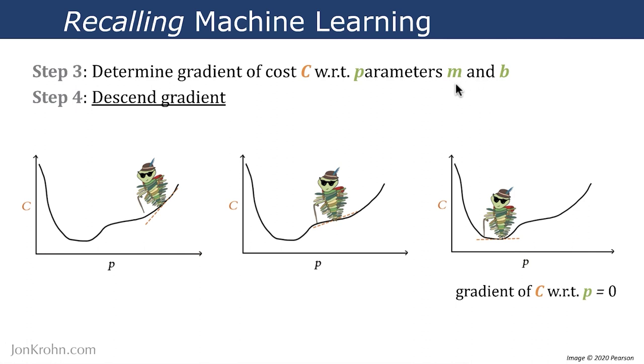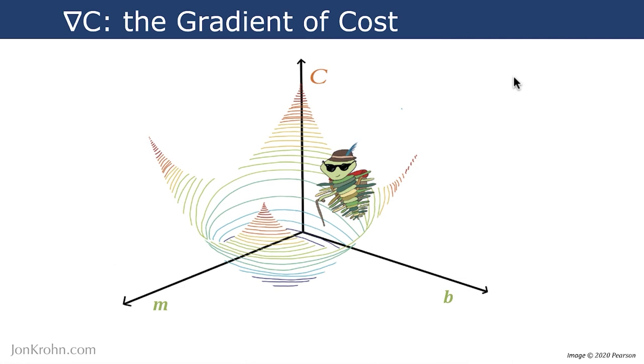As we've just discussed, even our very simple line model has two parameters, slope and y-intercept. So the gradient of cost with our two-parameter model with one parameter slope, another parameter the y-intercept, it looks a lot more like this. We have this three-dimensional cost curve where, based on the random m and b values that we initialize our model with at the beginning of training, we'll find ourselves somewhere on this cost curve.